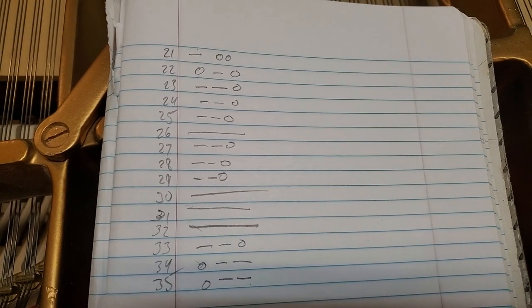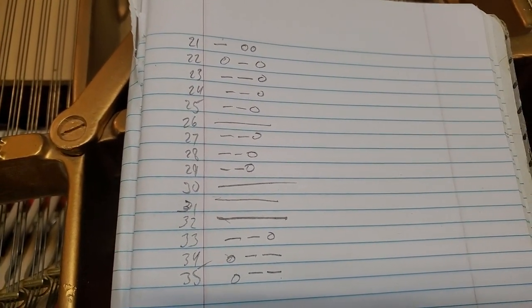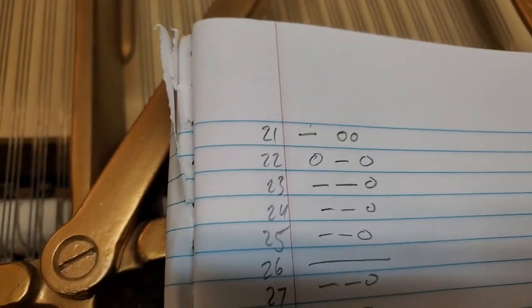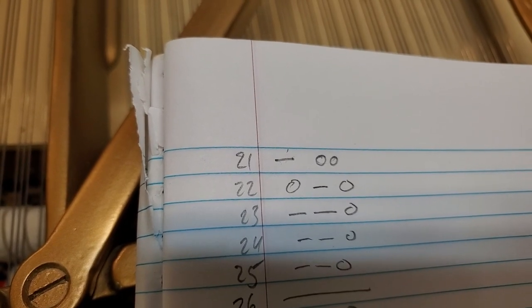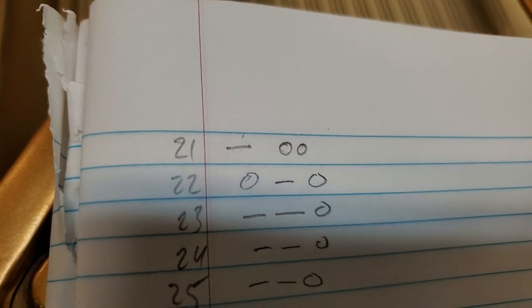This is hammer mating code to prevent having to pull the action out so many times. What the first line means, the minus sign, is that's where the string is touching. And then the circles are where the strings are not touching.